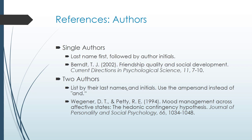For two authors, list by their last names and initials and use the ampersand instead of the written word 'and' to combine them. So you're listing Wegner, D.T. & Petty, R.E. — you use the ampersand in the citation itself, not the written-out word. This is different from MLA where you would write out the first author's full name. In APA, no matter how many authors there are, it's always last name, comma, first initials.